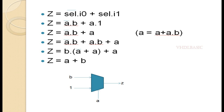So A-bar into I0 — instead of I0 it will be B — so A-bar into B, plus A dot 1. A dot 1 means A. So we get A-bar B plus A. Instead of A we can write A plus A dot B; taking B as common gives B dot (A-bar plus A). A-bar plus A is nothing but 1, so B dot 1 is nothing but B. Therefore Z equals A plus B, which is the OR gate expression.